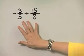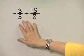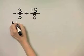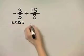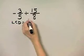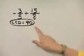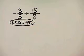Let's simplify this expression: negative three-fifths plus 15 over 8. We are adding fractions, so we must have the same denominator. What is the least common denominator here? For 5 and 8, that least common denominator is 40. 40 is the smallest number that's a multiple of 5 and a multiple of 8.